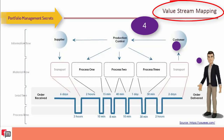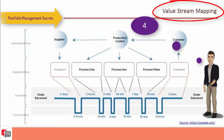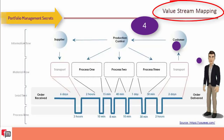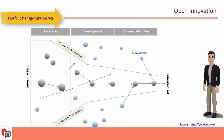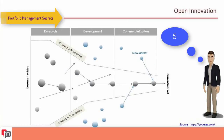The fourth tool is value stream mapping — a lean management tool that helps visualize the steps needed from product creation to delivering it to the customer. It helps with understanding your business better, as well as analysis and process improvement. This tool will be used in PMO at a more advanced level.